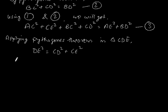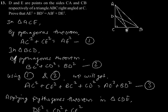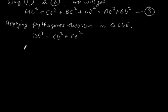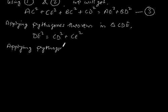Again by applying Pythagoras theorem in triangle ABC, we can express AC square plus BC square in terms of AB square.